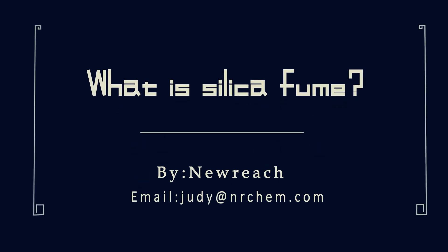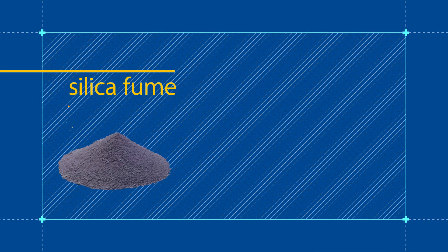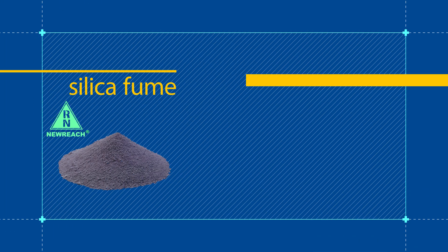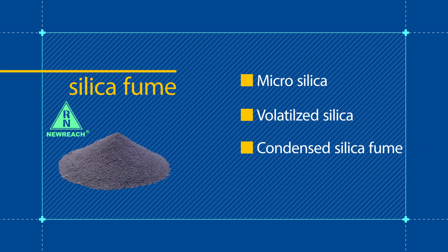What is silica fume? Silica fume is also known as micro silica, volatile silica, or condensed silica fume.